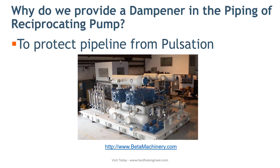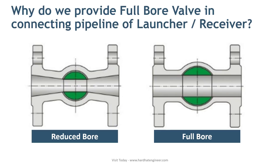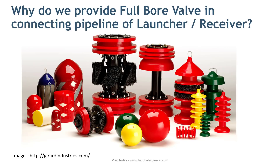Why do we provide a full bore valve in the connecting pipeline of a launcher and receiver? There are two types of valves: reduced bore and full bore. In the case of a full bore valve, the internal diameter of the valve passage is the same as the pipeline. Launchers and receivers are used to launch a pig. Pigging is an activity used to clean and inspect the line with the help of an intelligent pig. To pass this pig through the pipeline without it getting stuck at a valve, you must use a full bore valve.